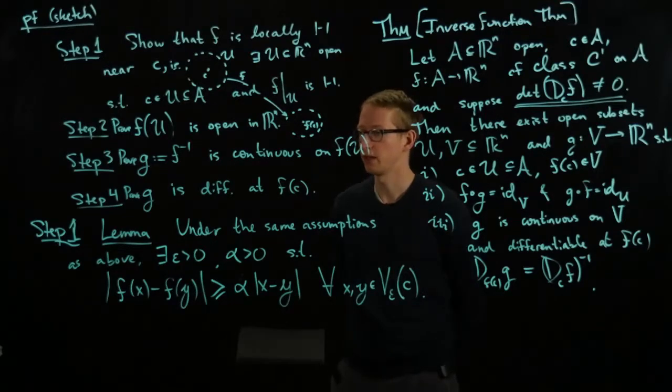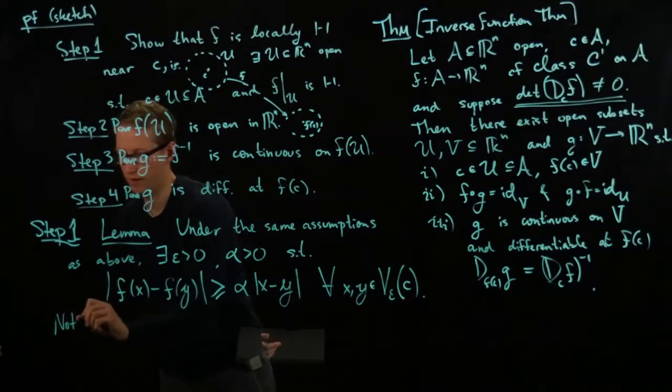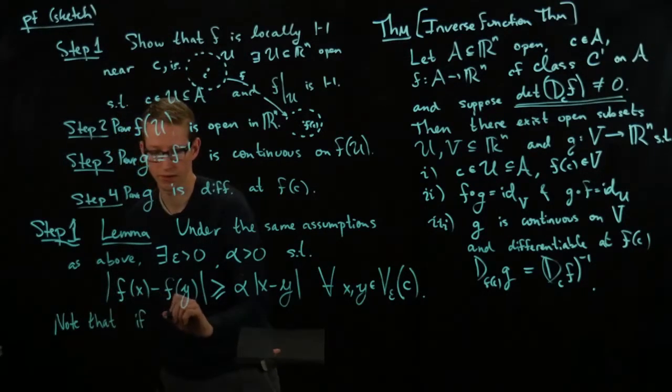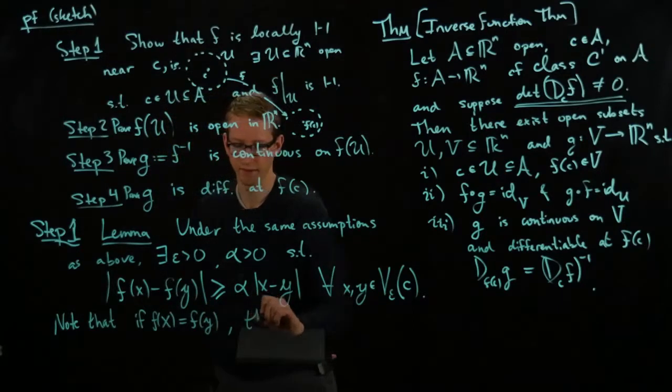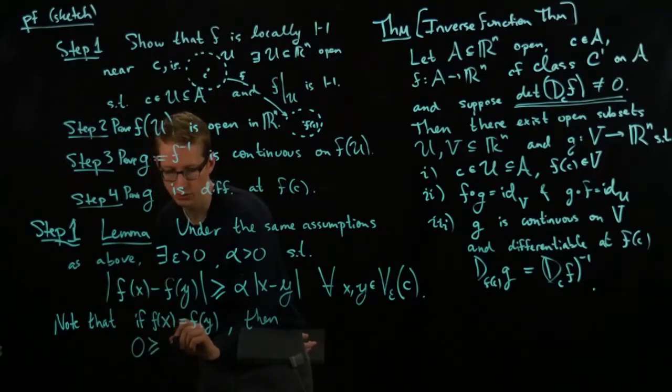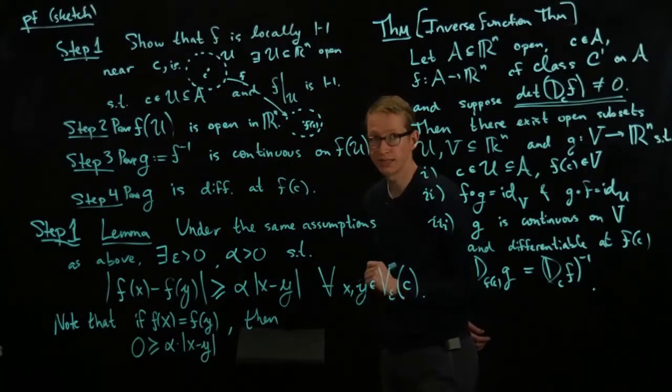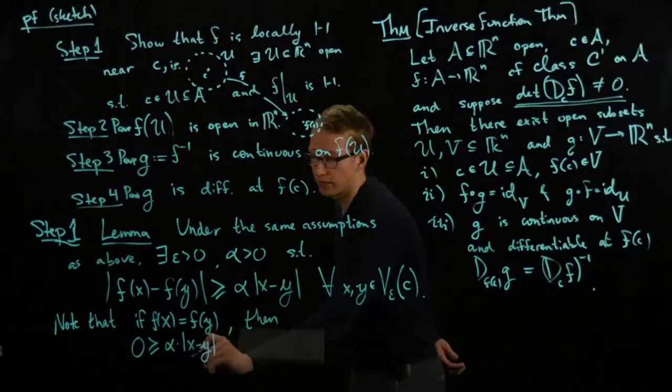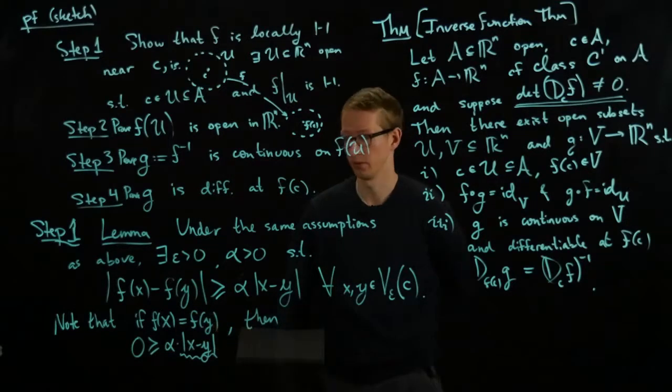f is continuous in some neighborhood of c. So, note that if f of x is equal to f of y then this inequality tells us that we have 0 is greater than or equal to alpha times x minus y, right? But alpha is positive and if this was also positive then this would violate that inequality because it would say that 0 is greater than or equal to some positive number.